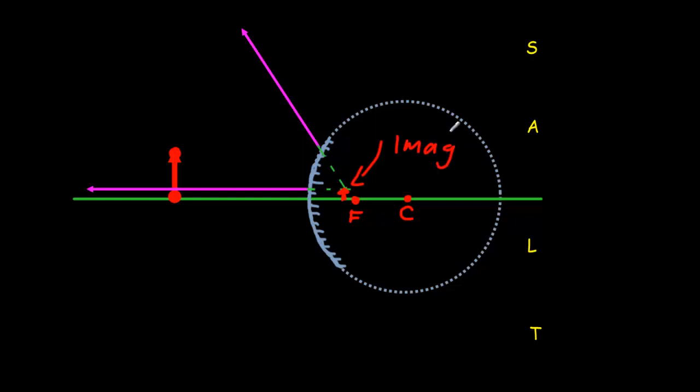Of course, the next step is to characterize that image. First thing, we want to compare its size to the size of the object. Here's the object, here's its image. Well clearly the image is smaller in size. So we're saying the image is smaller.